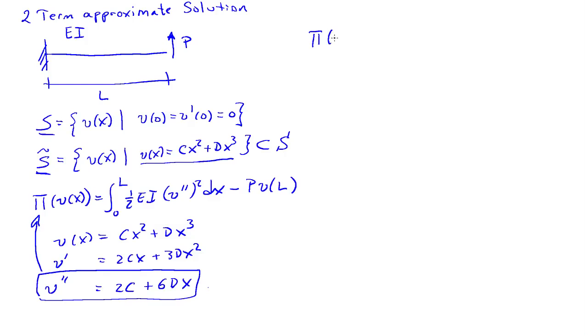We will insert this form into our expression for the potential energy. So pi becomes a function of C and D: the integral from zero to L of one-half EI times 2C plus 6dx squared dx, minus P times the deflection evaluated at x equals L, which is CL squared plus DL cubed.